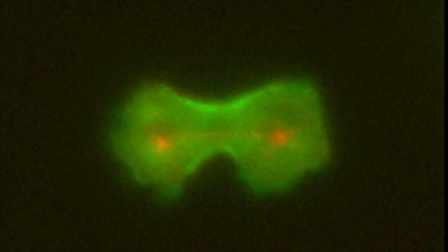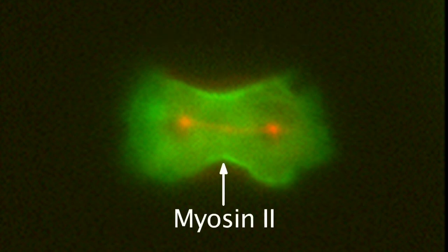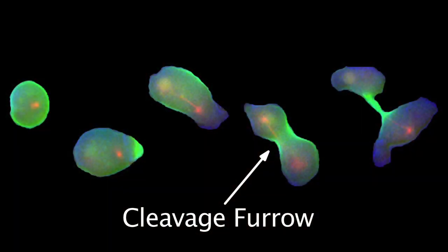Dictyostelium are single-celled amoebas that undergo cell division in a manner similar to human cells. The red structure is called the mitotic spindle and separates the genetic material into the two halves of the cell. The green signal is the protein myosin-2, which is found throughout the skin of the cell and concentrates in the cleavage furrow, where the cell's skin squeezes together until the cell divides in two.